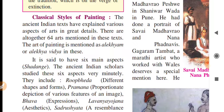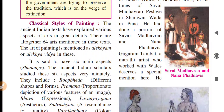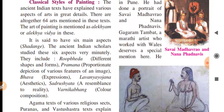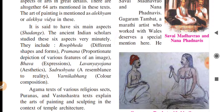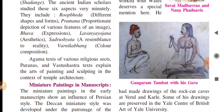Now, classical style of painting: the ancient texts explained many aspects in great detail. All together 648 aspects are mentioned in those texts. The art of painting is mentioned as 'Alakhyam' or 'Alekhya Vidya.' There are 6 important aspects called Shadanga: Rupabheda (different shape and form), Pramana (proportion and depiction of features), Bhava (expression), Lavaṇya Yojana (aesthetics), Sadrishya (resemblance to reality), and Varnikabhanga (color composition).